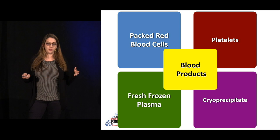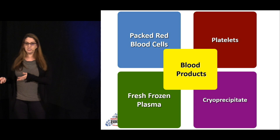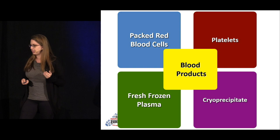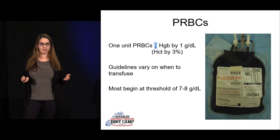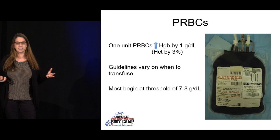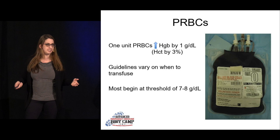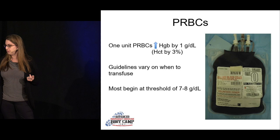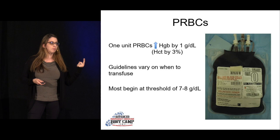The main blood products are PRBCs (packed red blood cells), platelets, fresh frozen plasma, and cryoprecipitate. For packed red cells, the shelf life is about 21 to 42 days, they're stored refrigerated, and the volume is about 250 cc's. Each unit you give should increase the patient's hemoglobin by one or the hematocrit by three.